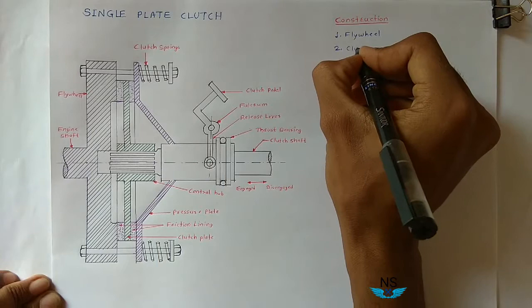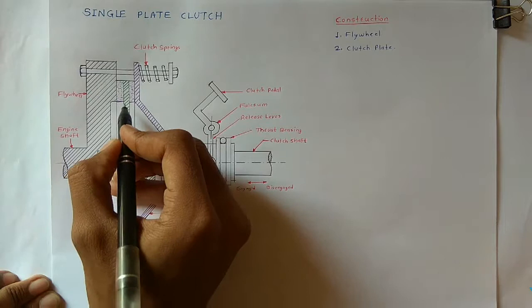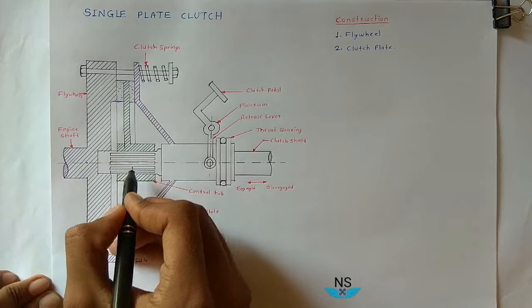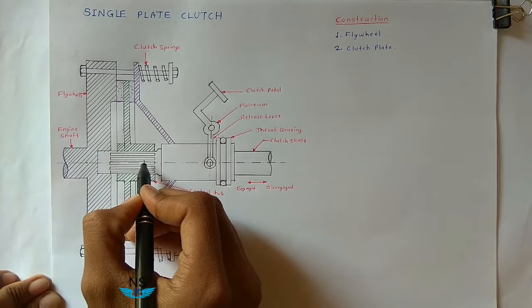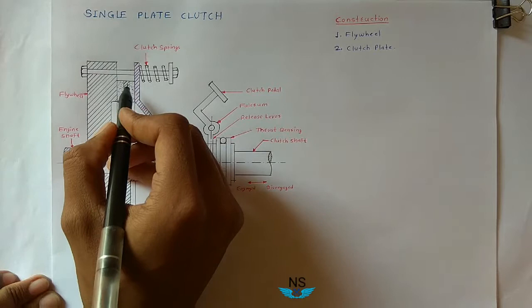The second part is the clutch plate. This clutch plate is a metal disc and it has a central hub. The hub is internally machined or splined. This splined hub is on the clutch plate.